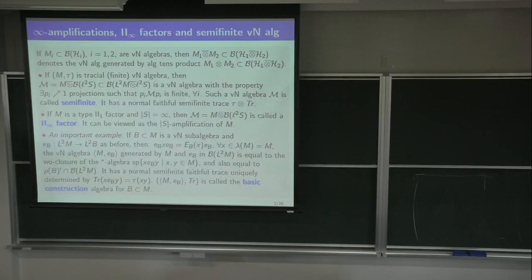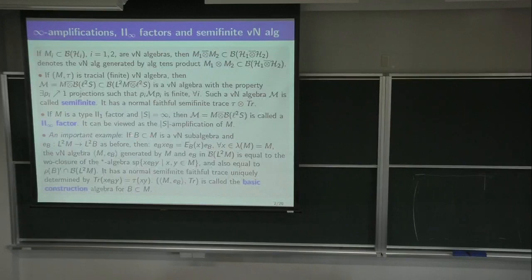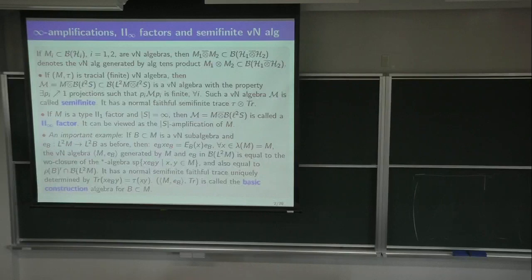These semi-finite von Neumann algebras are associated with inclusions of finite von Neumann algebras. Here M is the II₁ factor from before, or more generally a finite von Neumann algebra, and B is a von Neumann subalgebra — a weakly closed star subalgebra with the same identity as M. And E_B is the orthogonal projection.